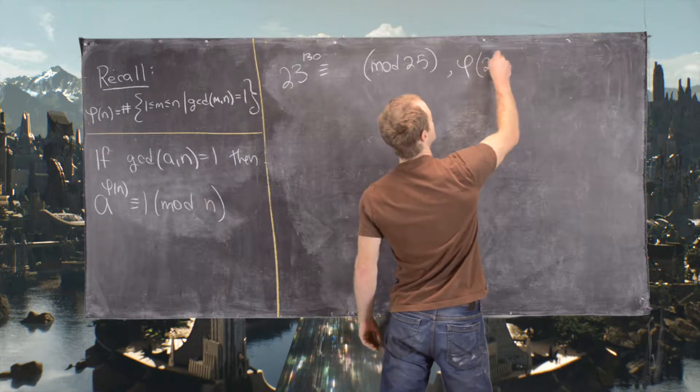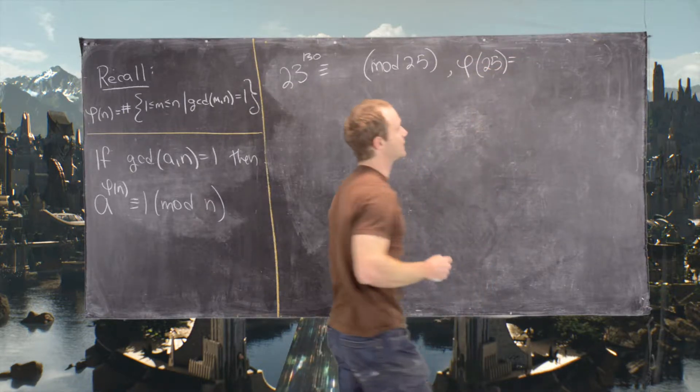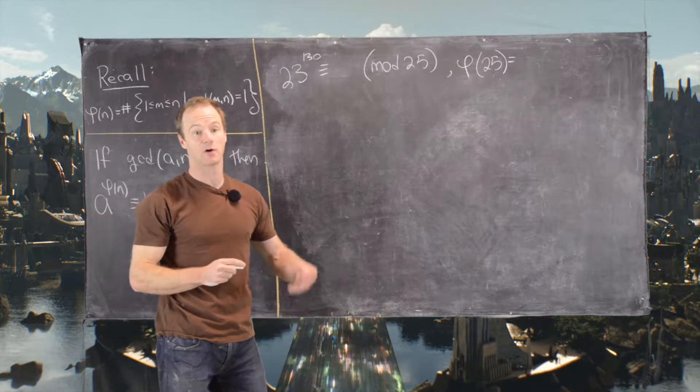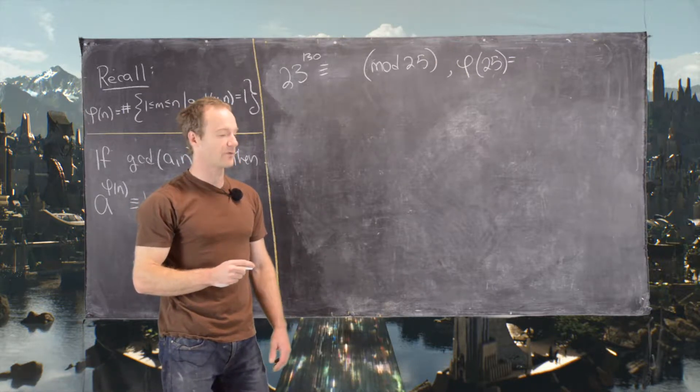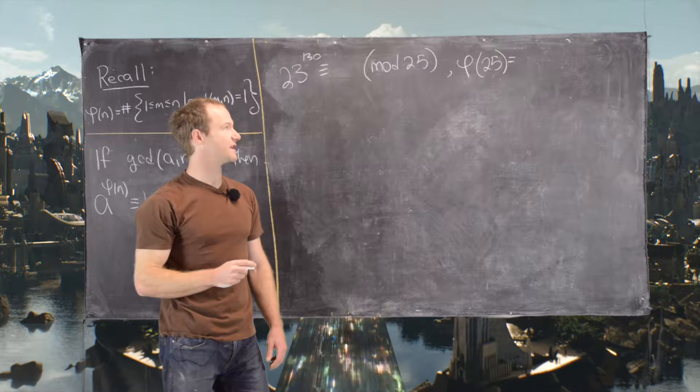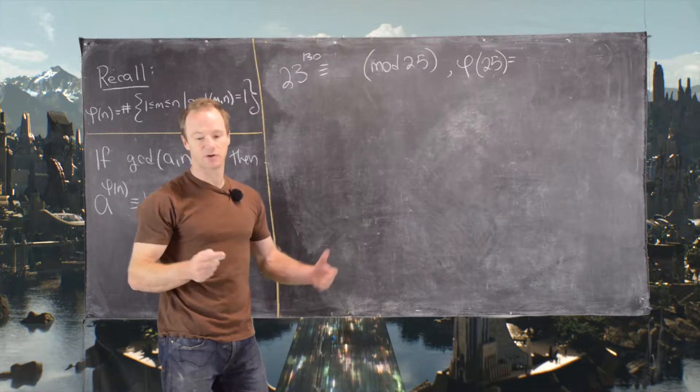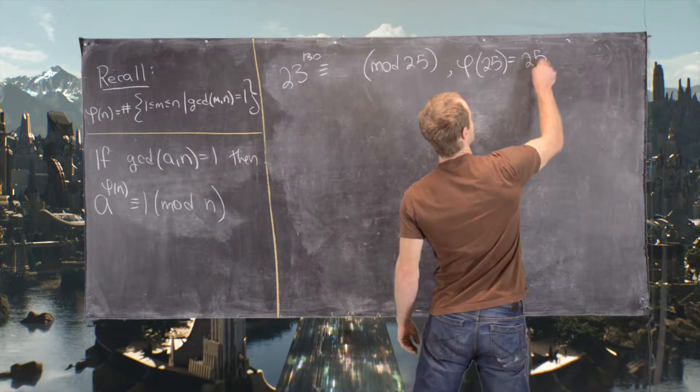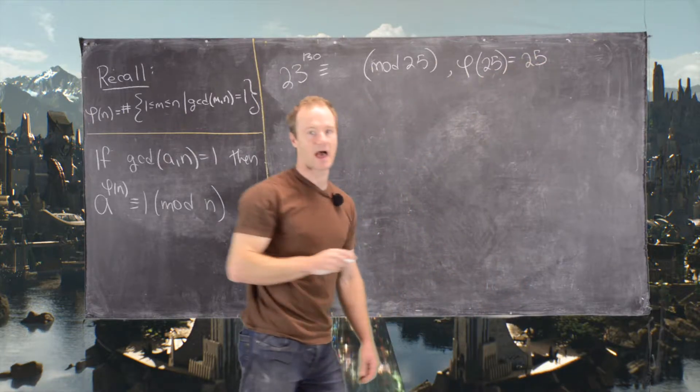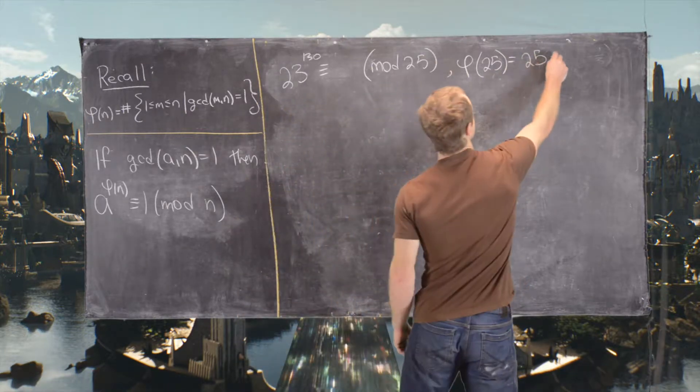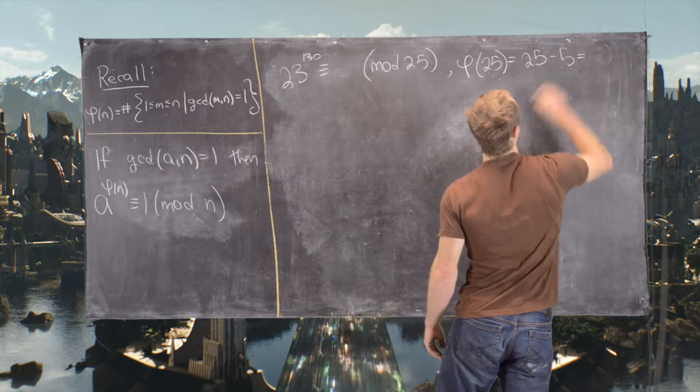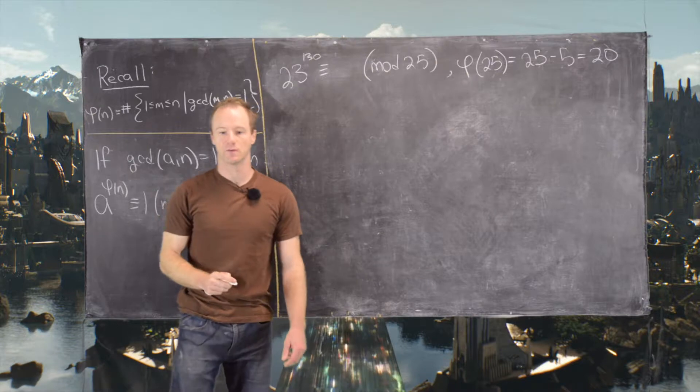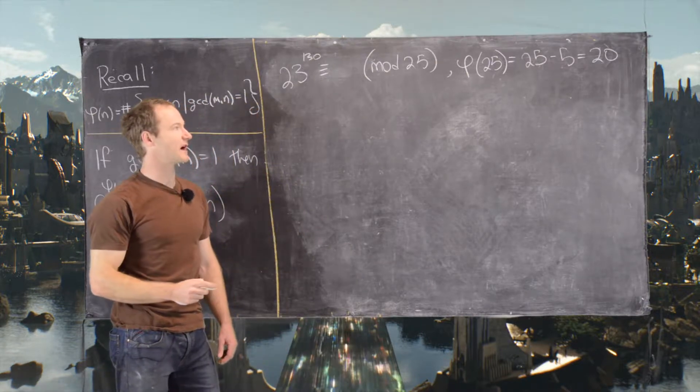So phi of 25 is, we could do this a couple of different ways. We could use the power of a prime formula for Euler's Theorem, or we could use the standard formula. Let's use the power of the prime formula. So it'll be the power of the prime that we have minus one less power of that prime. So it would be 5 squared minus 5 to the 1. In other words, 25 minus 5, which is 20.